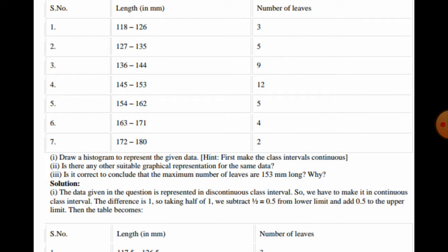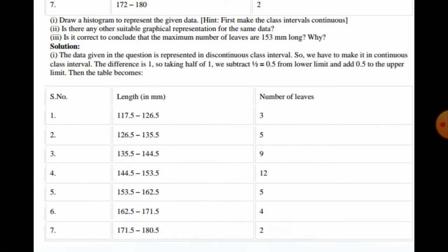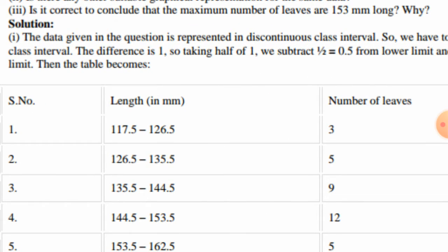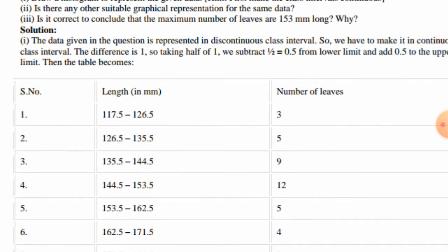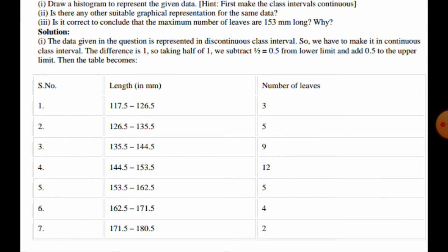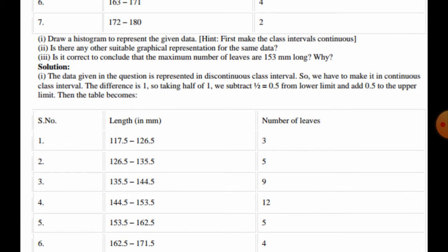To draw the histogram, we first adjust the class boundaries. We subtract 0.5 from the lower limit and add 0.5 to the upper limit. The new intervals become: 117.5–126.5, 126.5–135.5, 135.5–144.5, 144.5–153.5, 153.5–162.5, 162.5–171.5, and 171.5–180.5. This makes it a proper continuous distribution with equal gaps in all ranges.